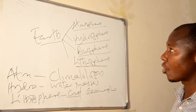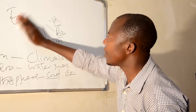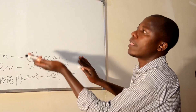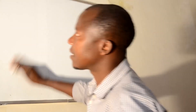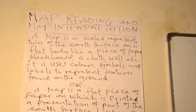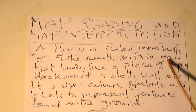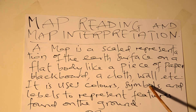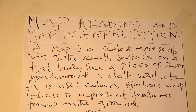Therefore, the topic of today is called map reading and interpretation. What is the meaning of map reading? This subtopic gathers all those sub-topics together. A map is a scaled representation of the surface on a flat board, like a piece of paper, blackboard, or cloth or wall. It uses colors, symbols, and labels to represent features found on the ground.